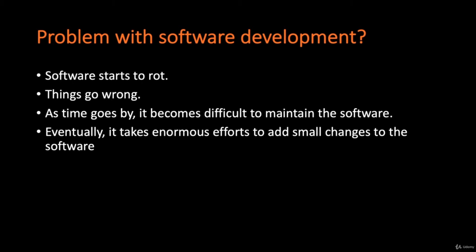Software starts to rot. What does this mean? In the process of software development, no software is static in nature. It is continuously changing and evolving as we keep on adding new features to it. Things start to go wrong when we start making changes to our software due to feature requests from our customers. Any change you make to the software induces a chance of two things: breaking existing functionality and increasing the complexity of the code. If we don't learn how to make changes correctly, over time it will become very difficult to maintain the software.